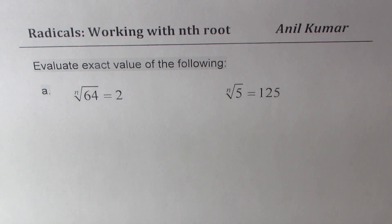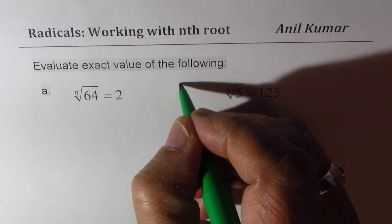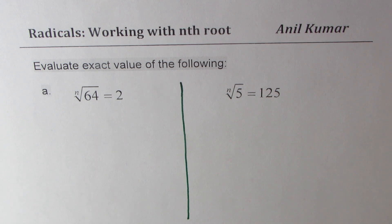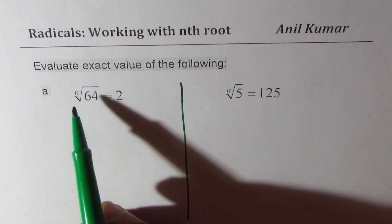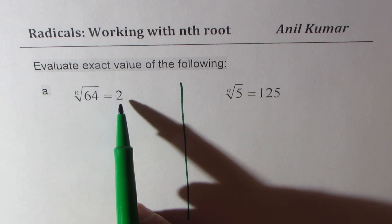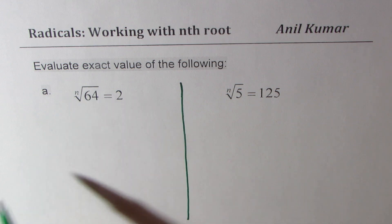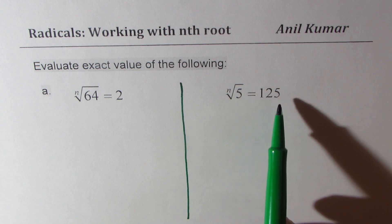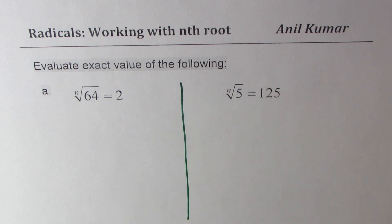Now here is a question from one of our subscribers. I'm not very sure exactly what he or she needs, but that is how I perceive, and so I've written two questions from the information I could get. First is nth root of 64 equals 2, we need to find what is n. And the second is nth root of 5 is 125, we need to find what is n.